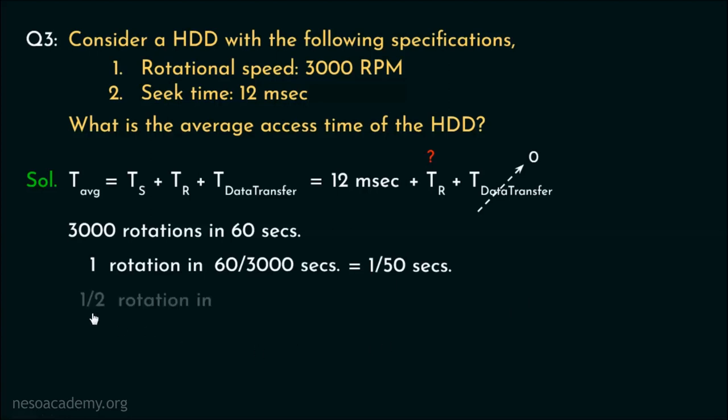So, half rotation will take 1 by 2 into 1 by 50 seconds, that is, 1 by 100 seconds, which is 10 milliseconds, because 1 second is 10 raised to the power minus 3 milliseconds. So, this is the average rotational speed, remember, it's the average.